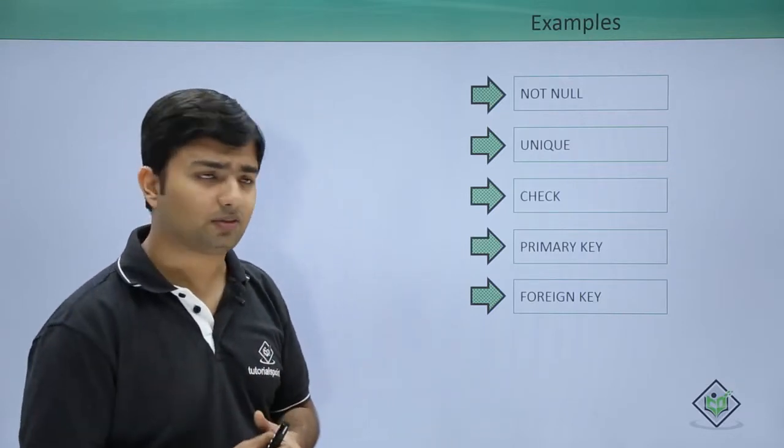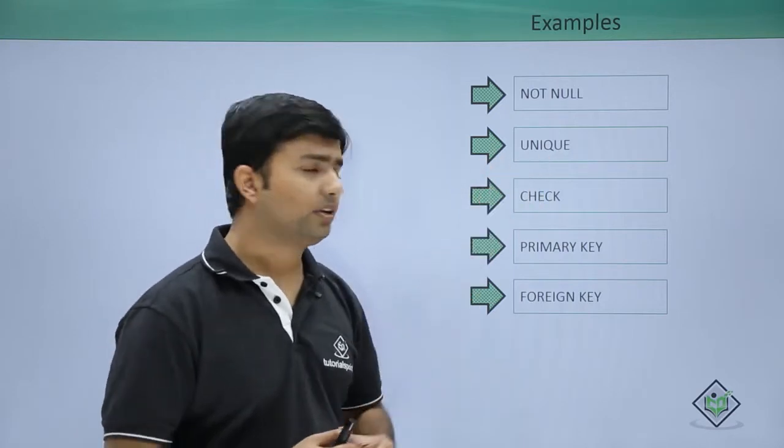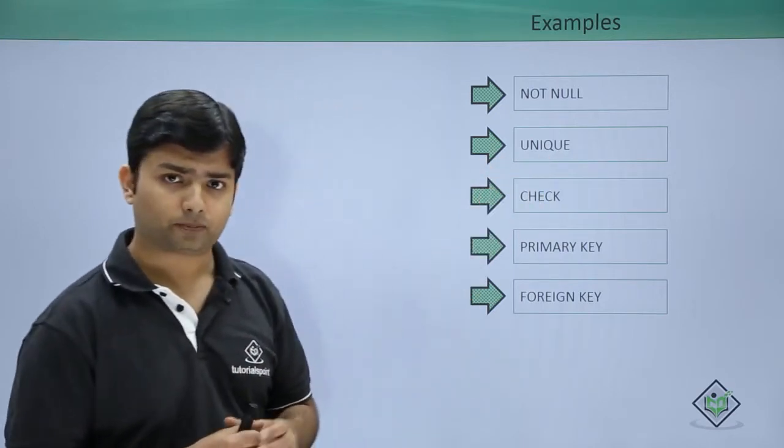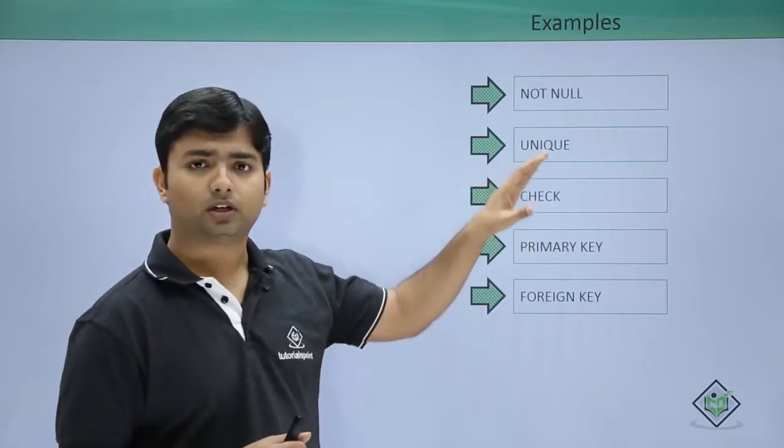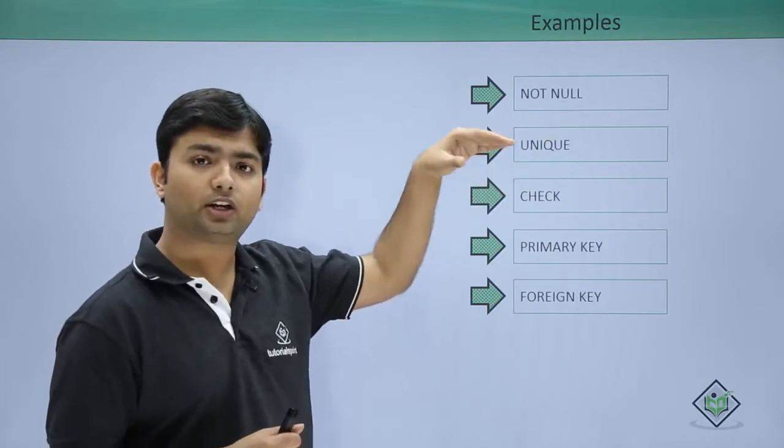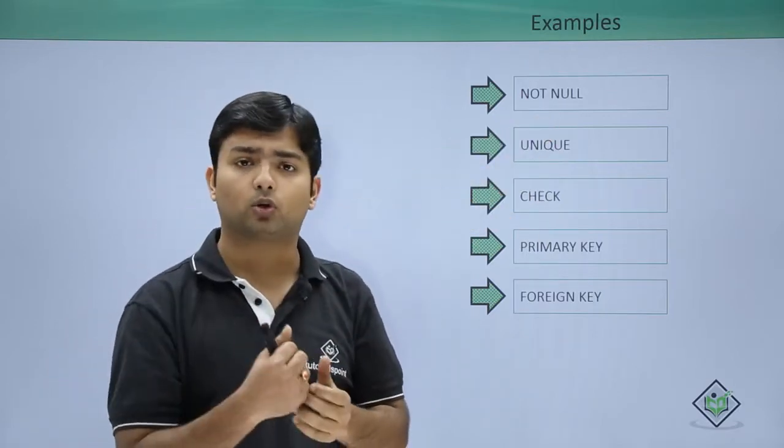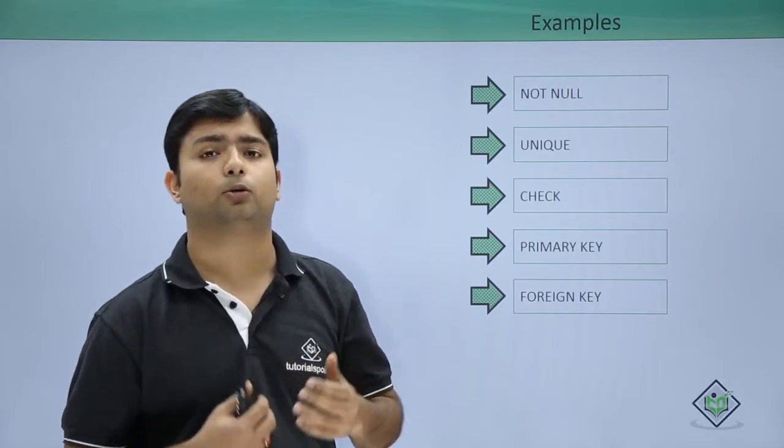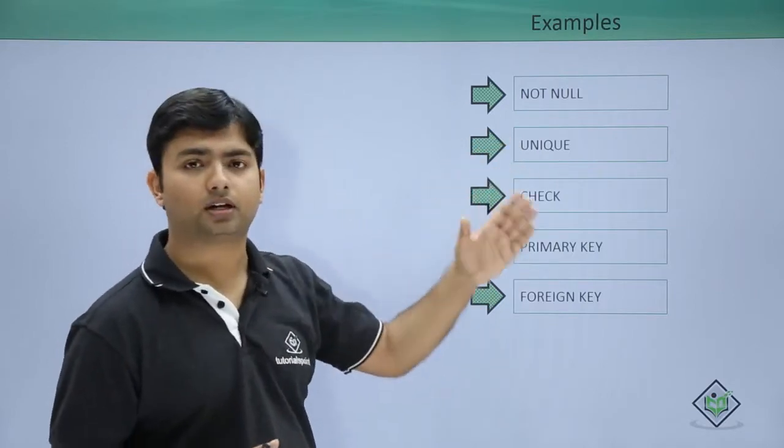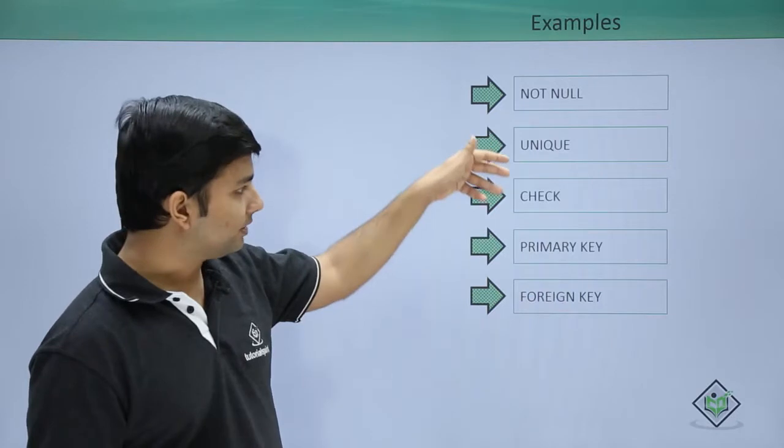Then next is UNIQUE constraint. UNIQUE constraint is something where you can actually ensure that that particular column will not accept any duplicate data, but it can accept a null. Similarly, CHECK constraint will do the checking of the incoming value.